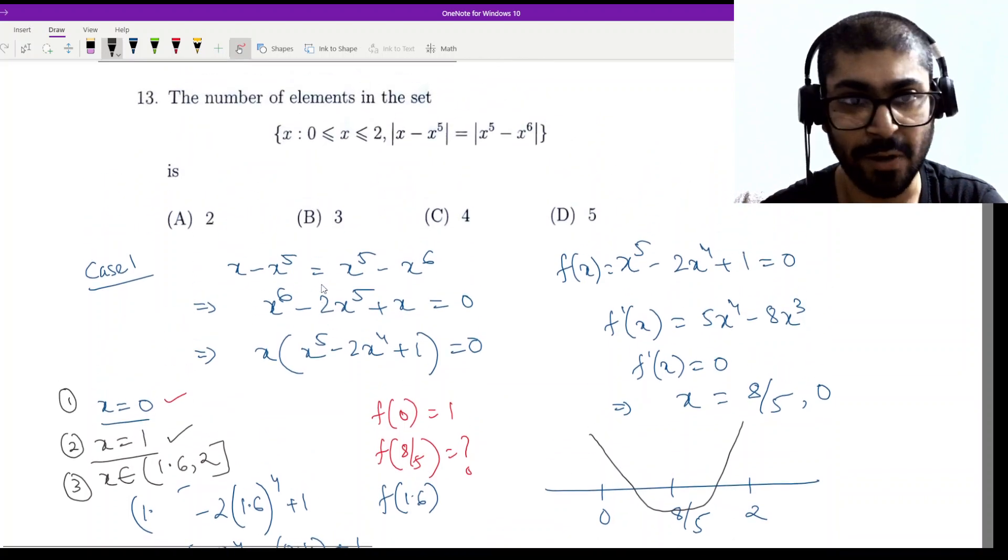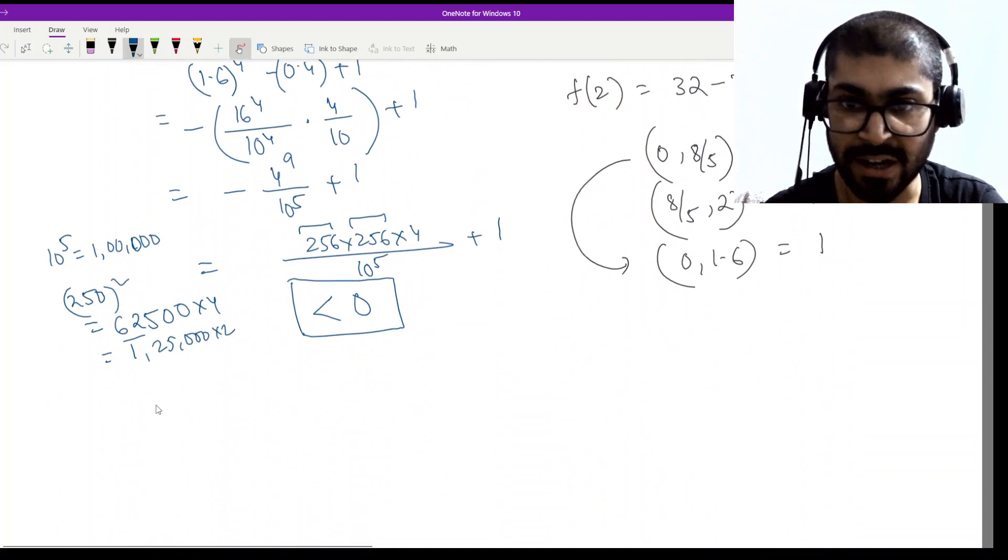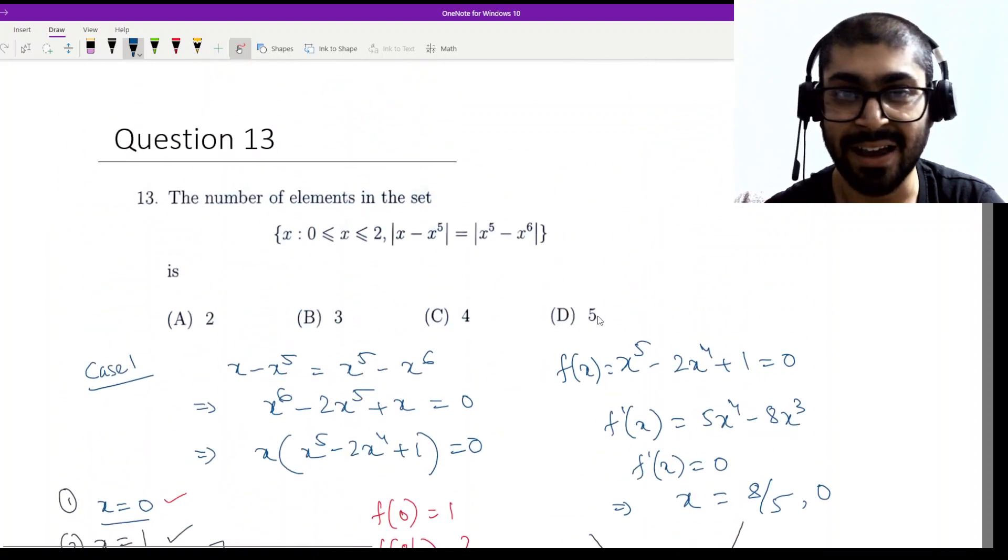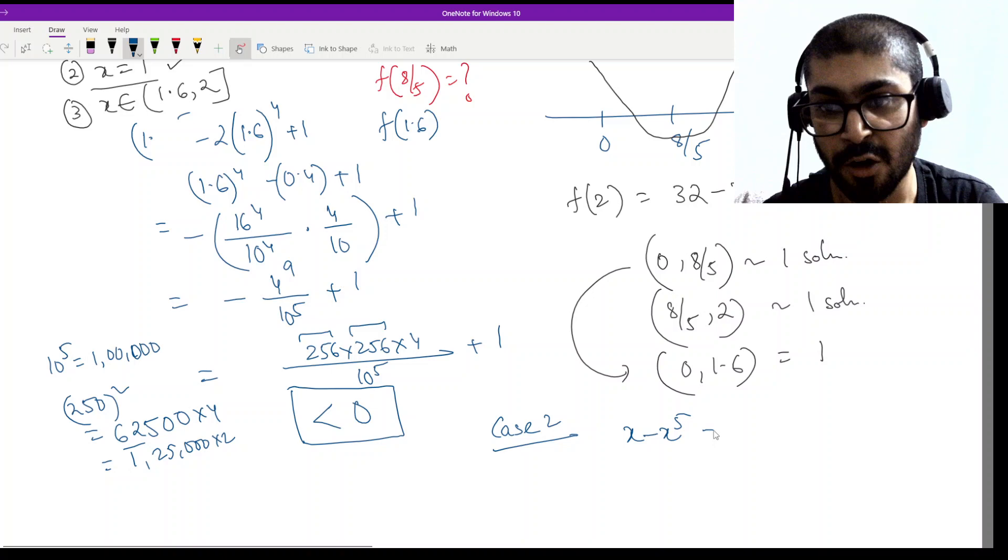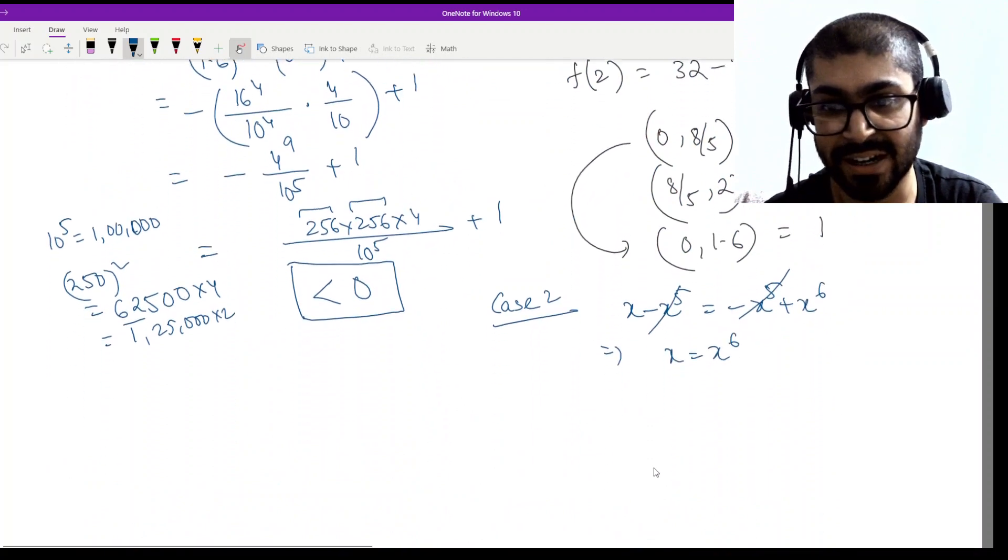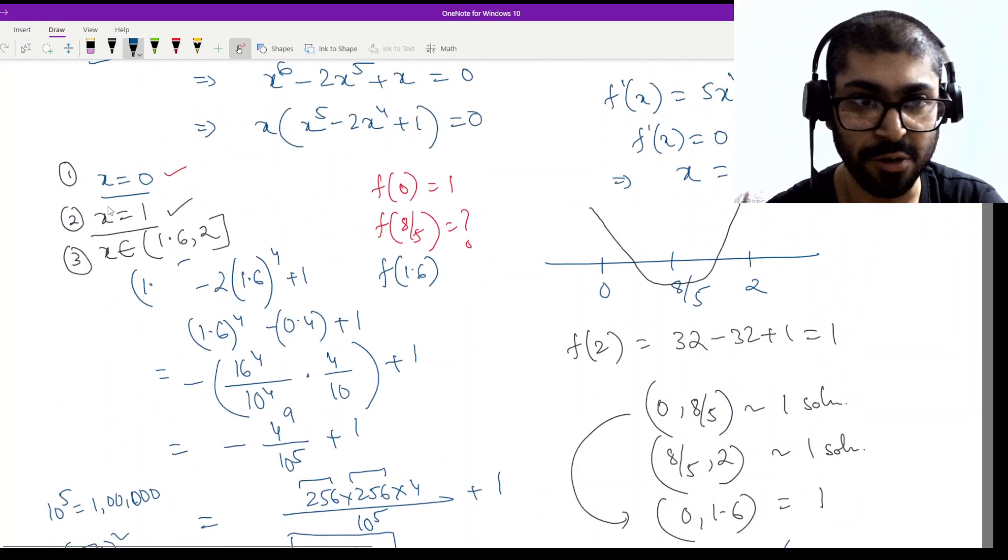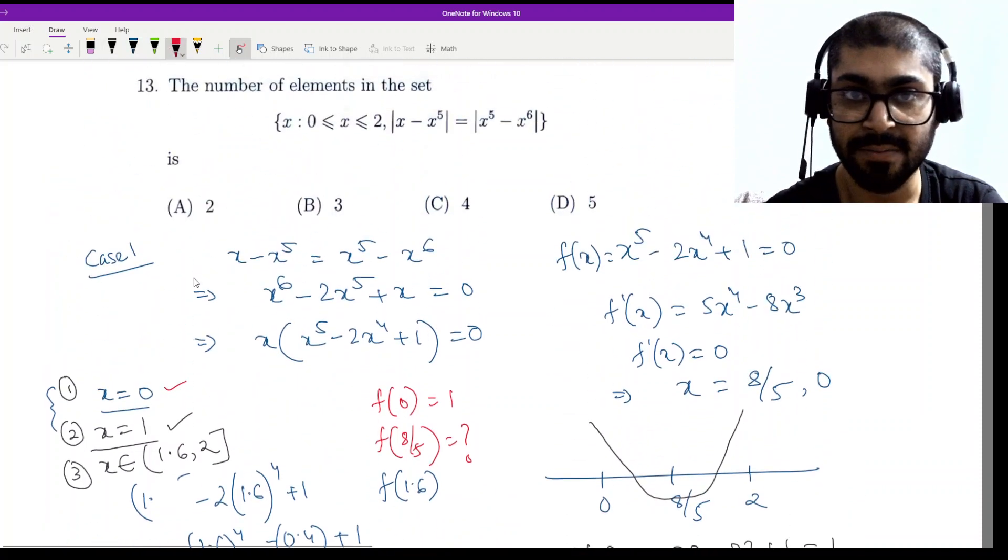There is nothing much more to discuss here. Now case 2. Looking at it, it seems it will be quite simple because if case 1 is complicated, then case 2 is usually not more difficult. In case 2 what happens? X minus x to the power 5 equals minus x to the power 5 plus x to the power 6. This becomes x equal to x to the power 6. What solution does this give? X equal to 0 or 1. So this matches again with those two. So we have how many unique solutions? 3.